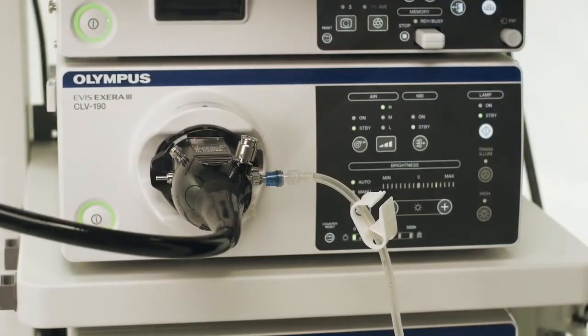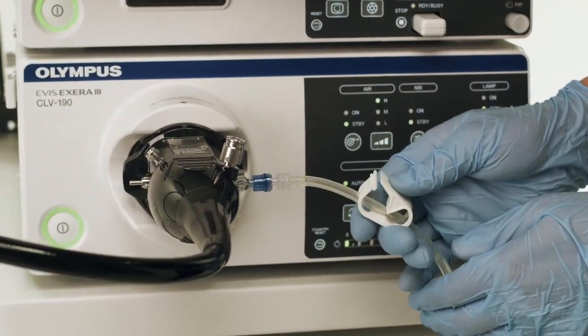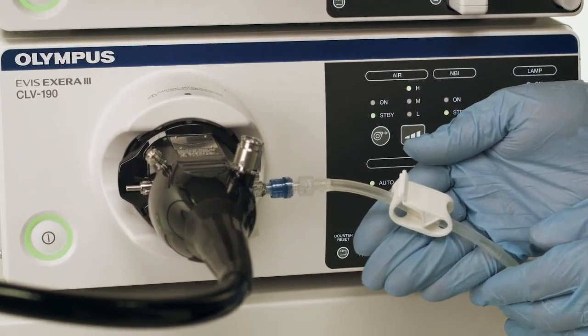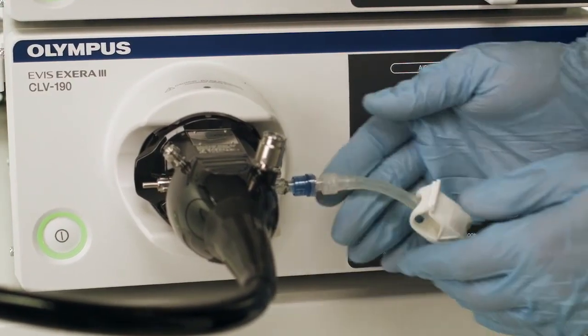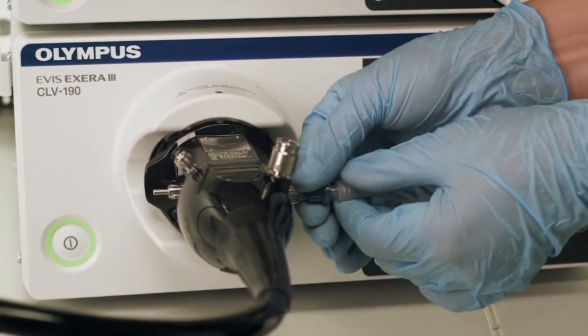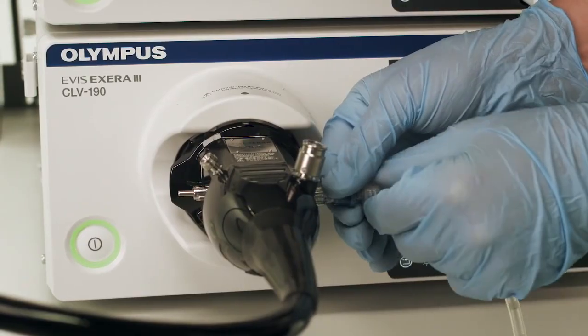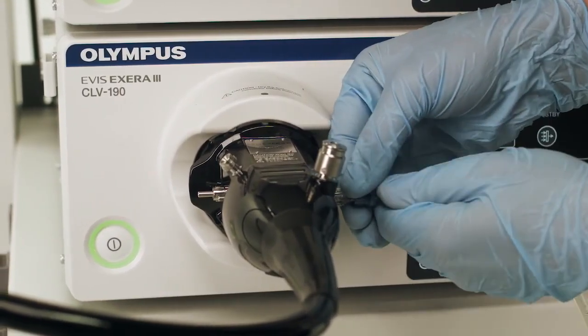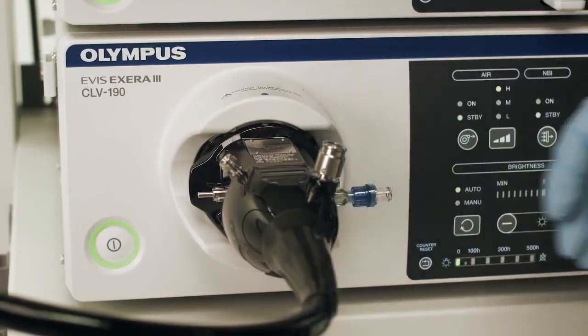Upon completion of the procedure, engage the pinch clamp by pressing between the thumb and forefinger, ensuring that the clamp compresses the tube. Then detach the tube set from the adapter by holding the MAJ 1652 in place and rotating the lure fitting, leaving the adapter on the endoscope.